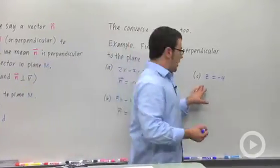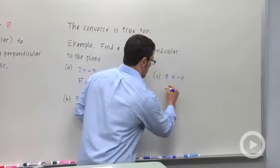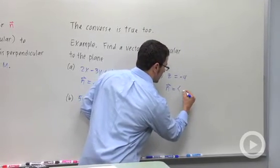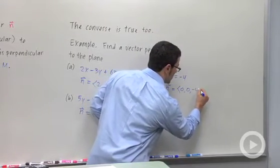And here, I don't have an x or a y term. So my normal vector would be 0, 0, negative 4.